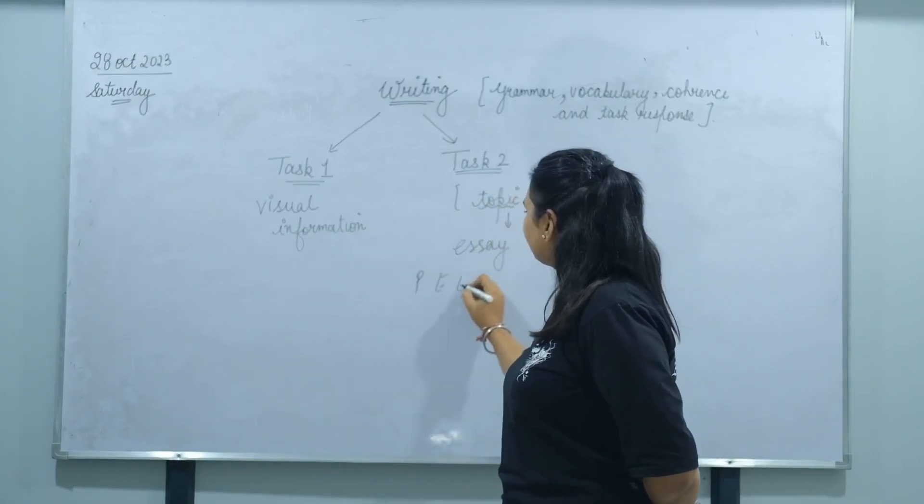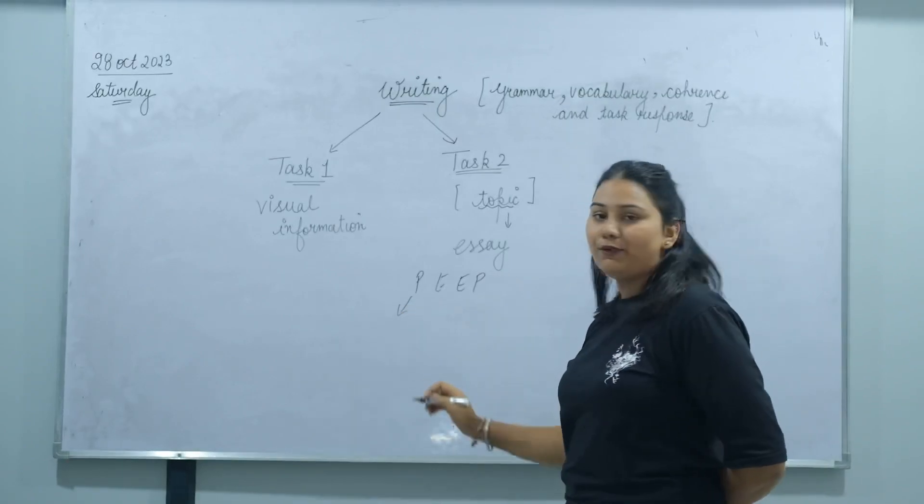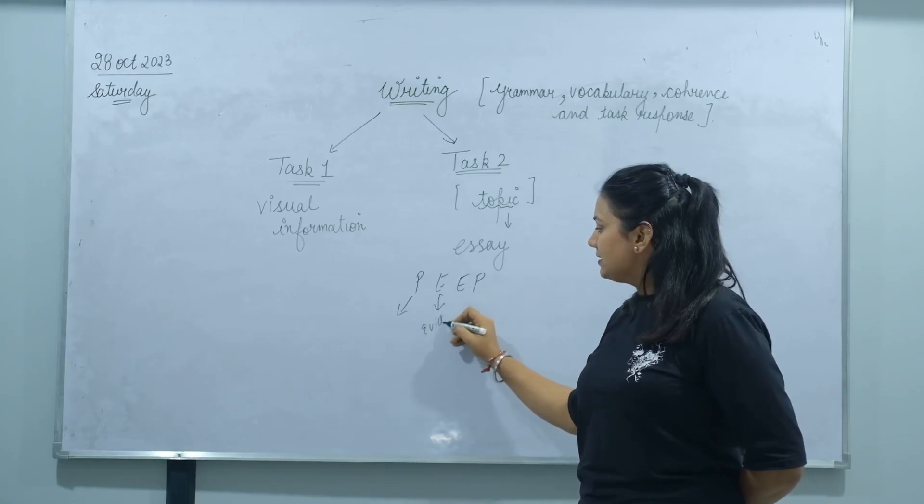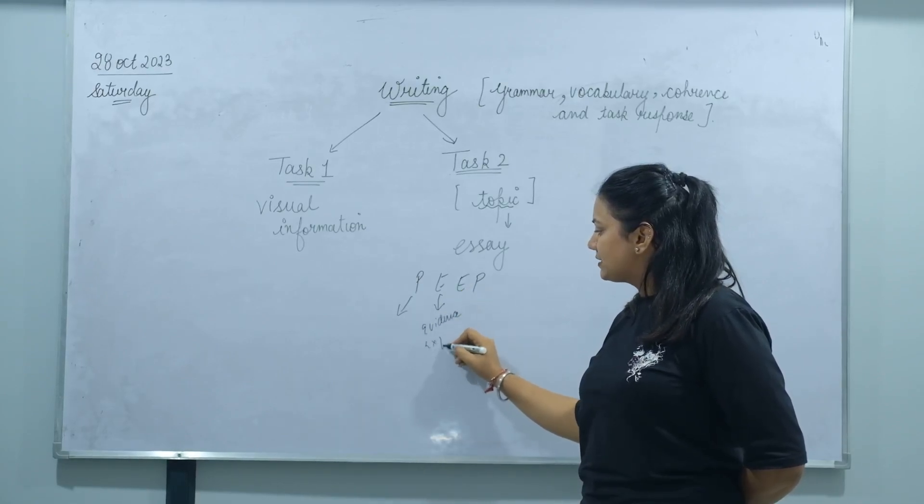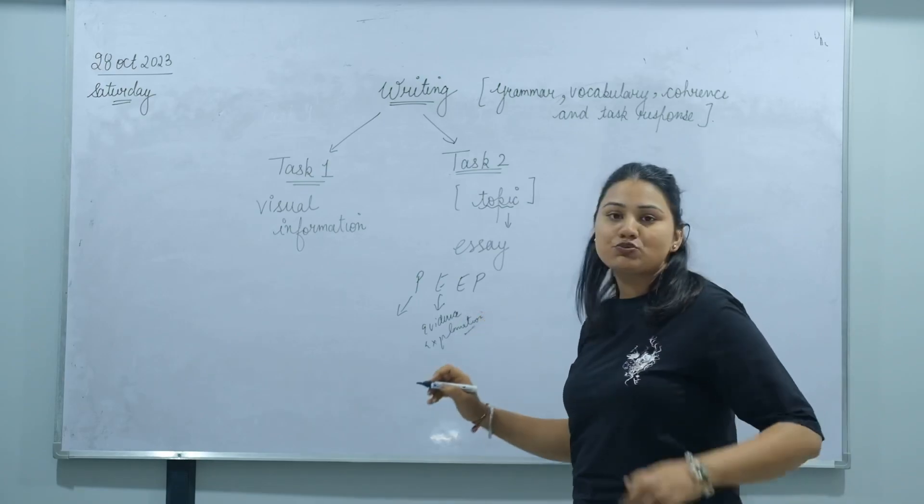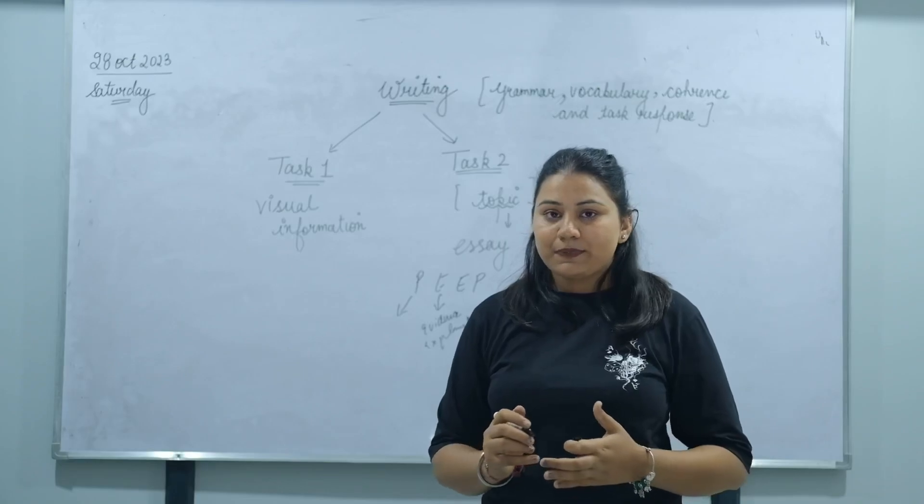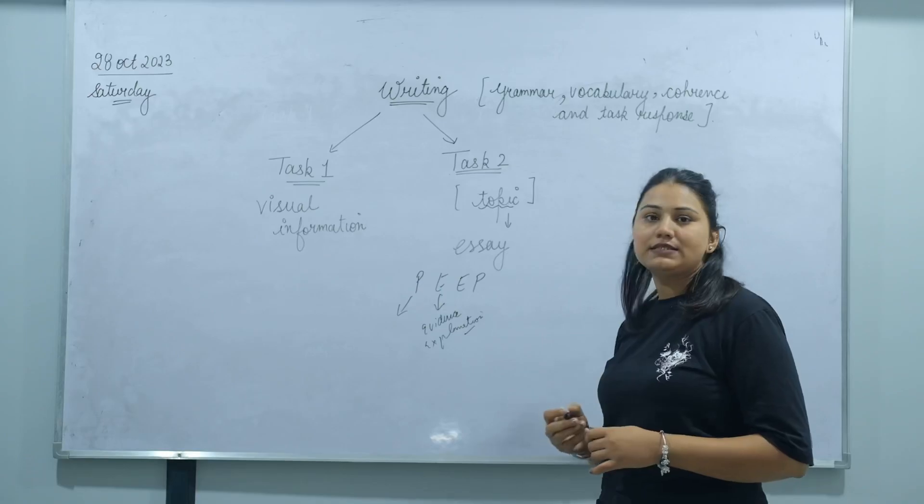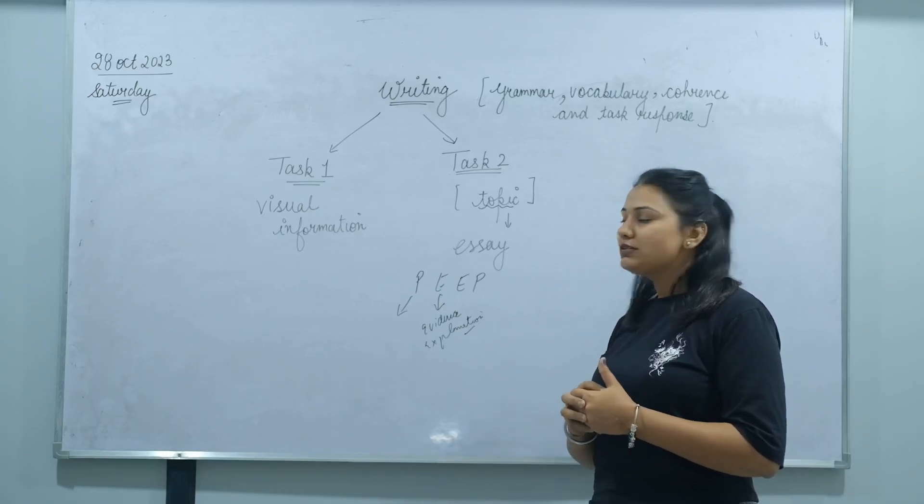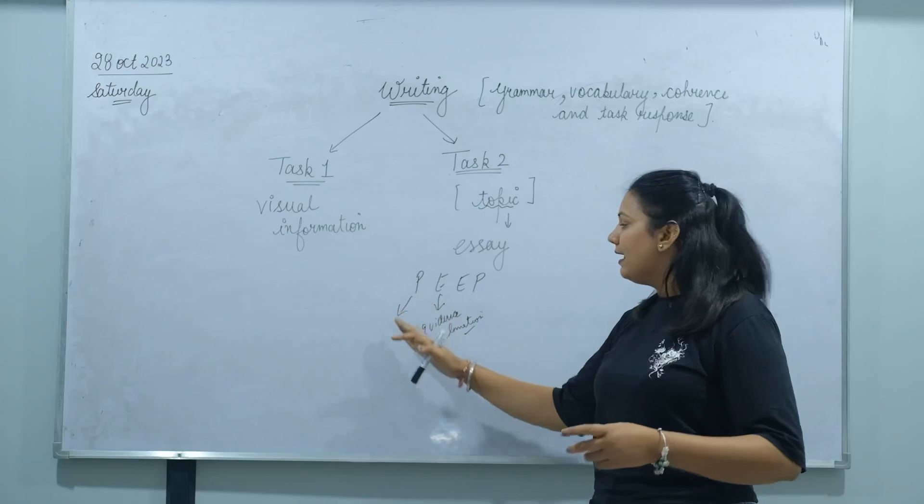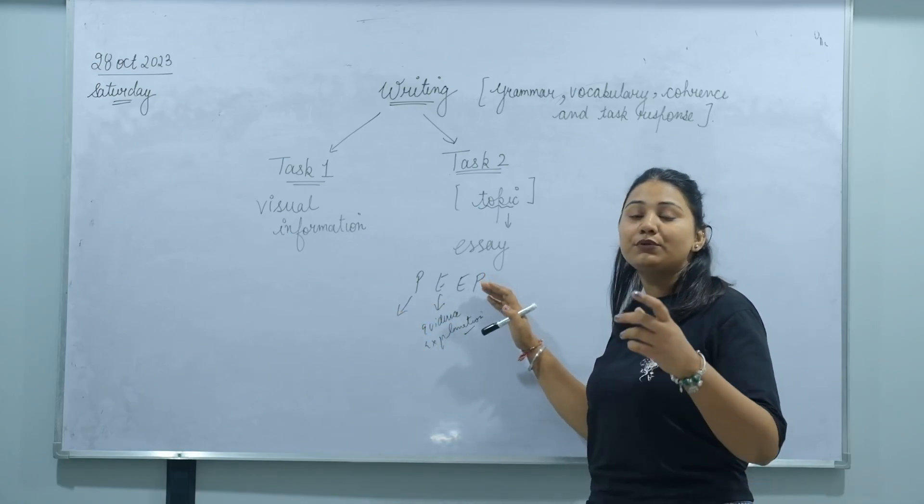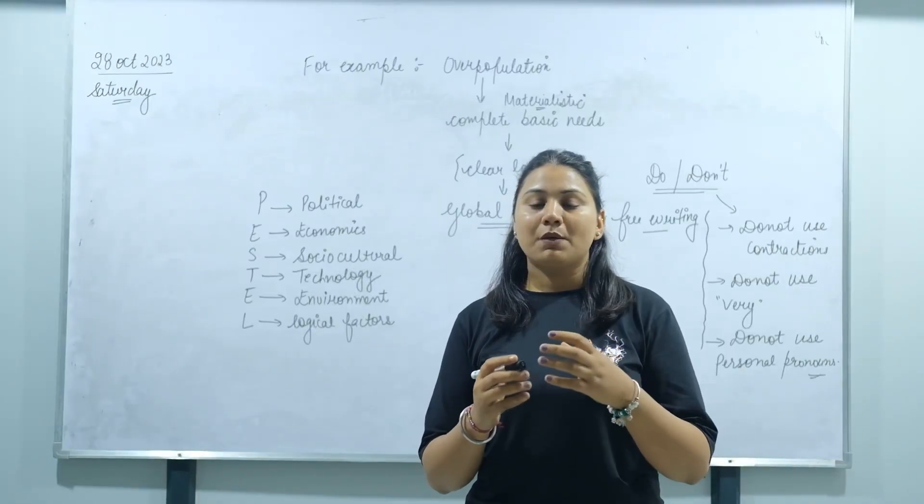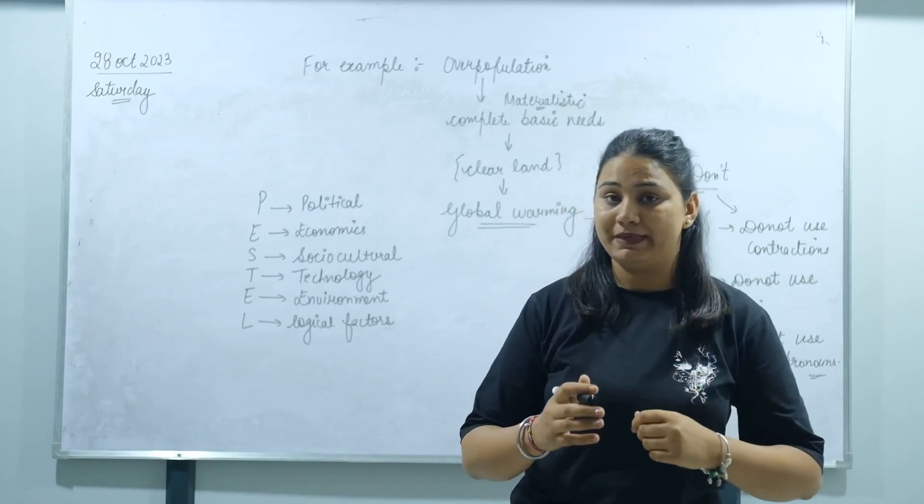The PEEP method stands for: P is the point related to your statement, E is for evidence or explanation related to the point, E stands for example, and the last P is the point closer. Point closer means the point which you start in the beginning and end and link. What could be the result of this point?